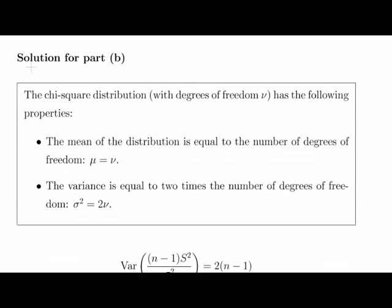So the second one is, just actually, let's look at the theory first. The chi-squared distribution with degrees of freedom nu has the following properties: The mean of the distribution is equal to the degrees of freedom, mu equals nu. And the variance of it is equal to two times the degrees of freedom, so sigma squared is equal to two nu.